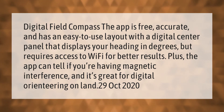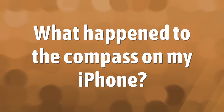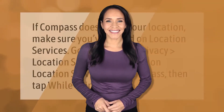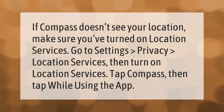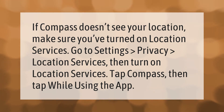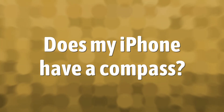If Compass doesn't see your location, make sure you've turned on location services. Go to Settings, Privacy, Location Services, then turn on Location Services. Tap Compass, then tap 'While Using the App.'